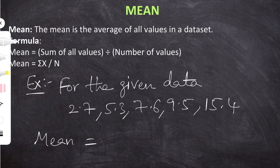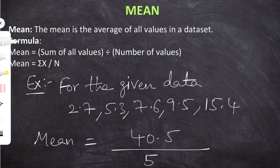The number of values are 5, and now we have to calculate the sum of those 5 values. The total of 2.7, 5.3, 7.6, 9.5 and 15.4 is 40.5. Now we divide 40.5 by 5 and the final answer is 8.1. So the mean of the given data is 8.1.